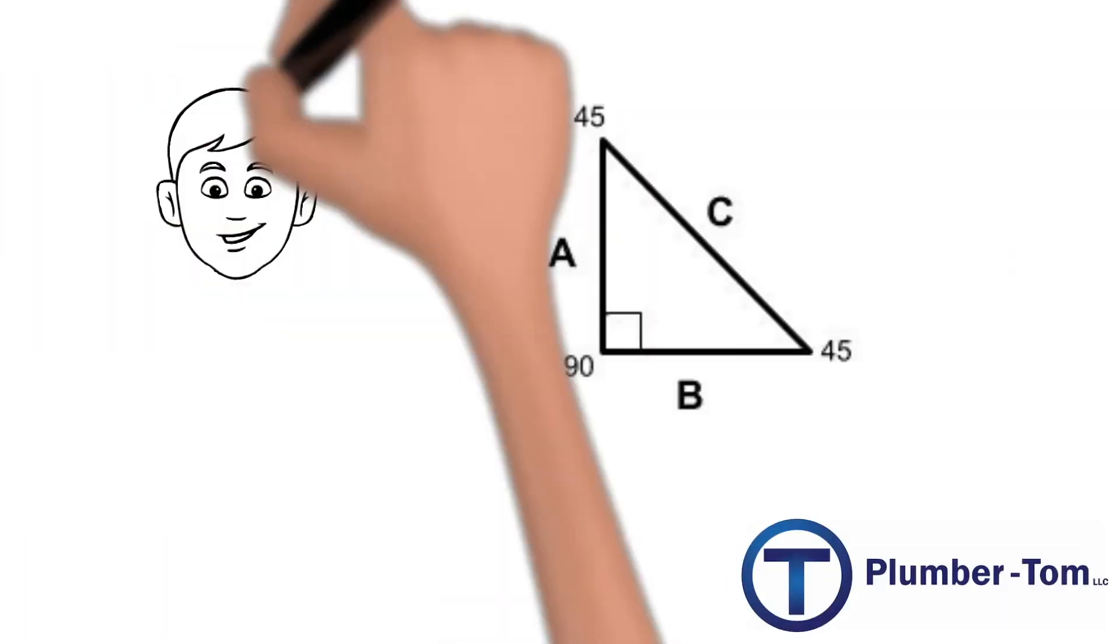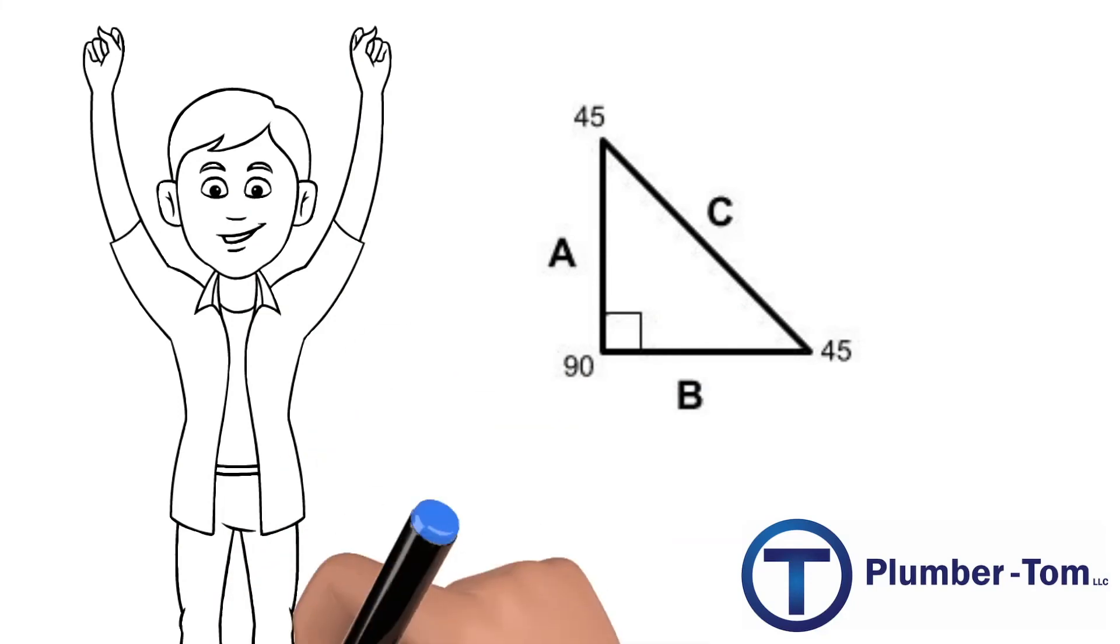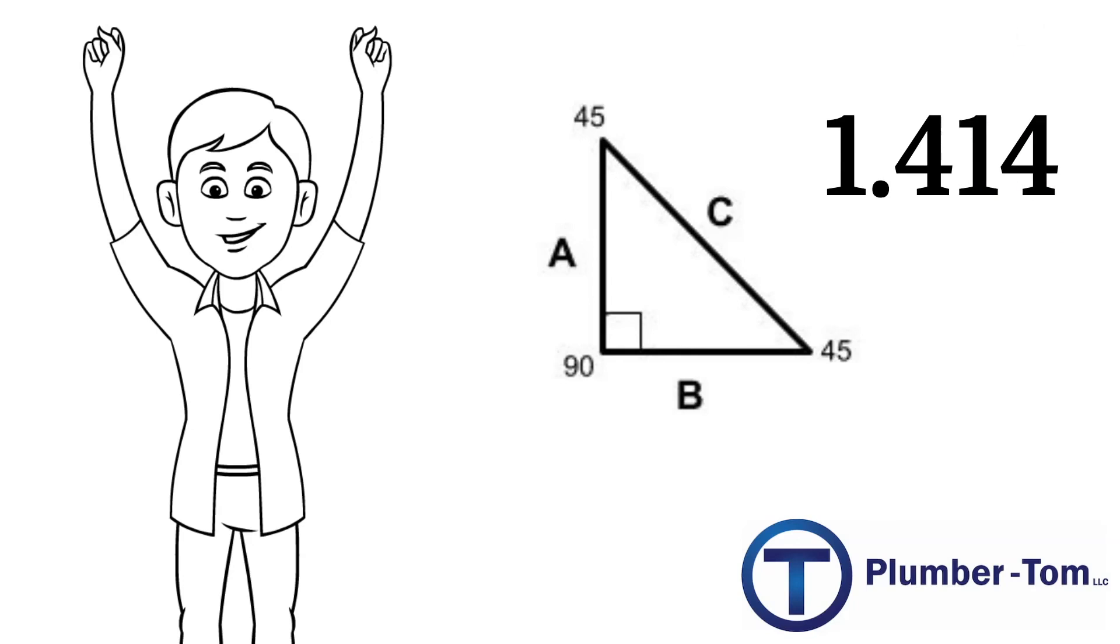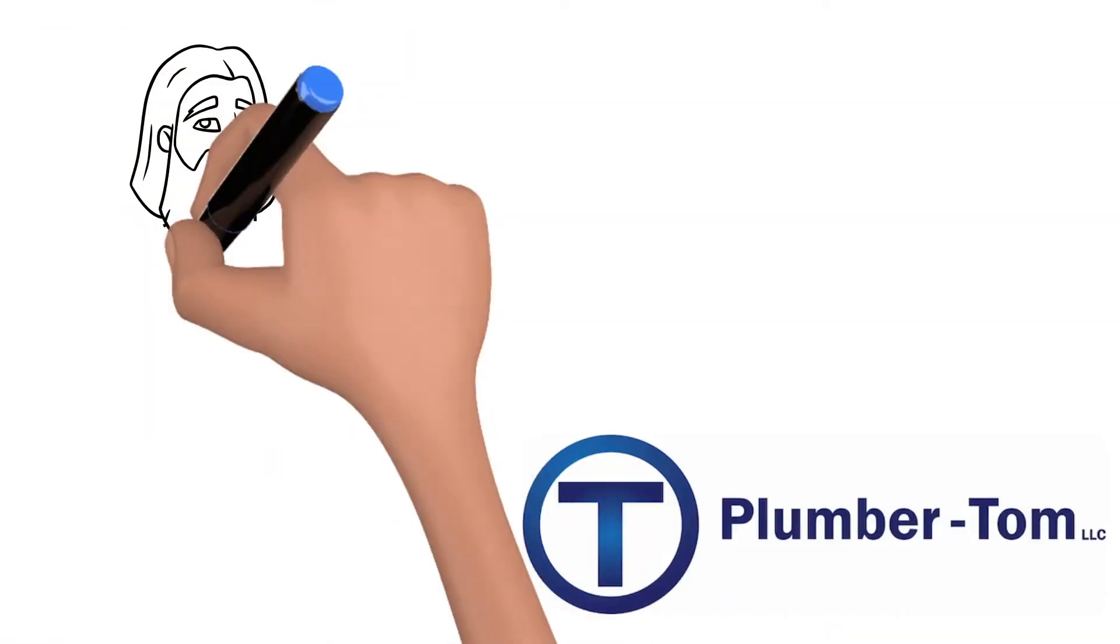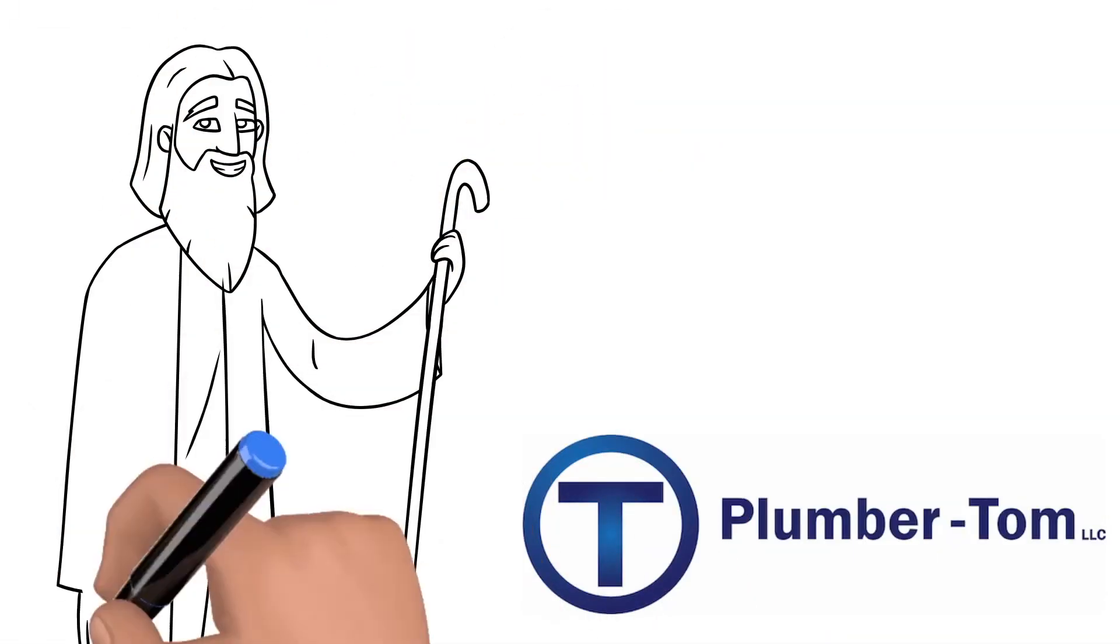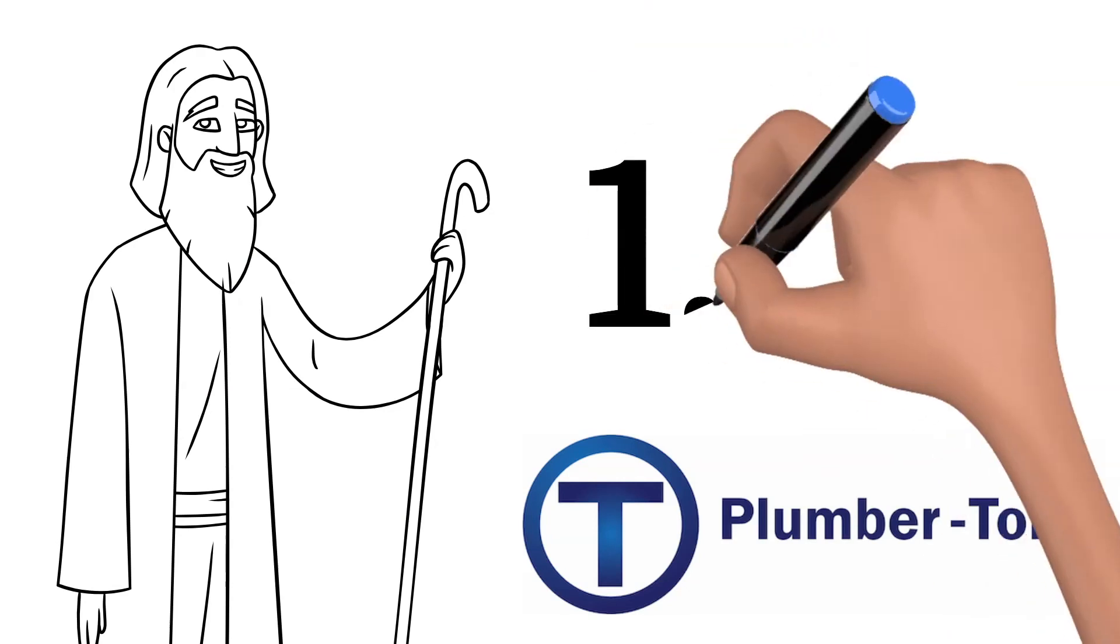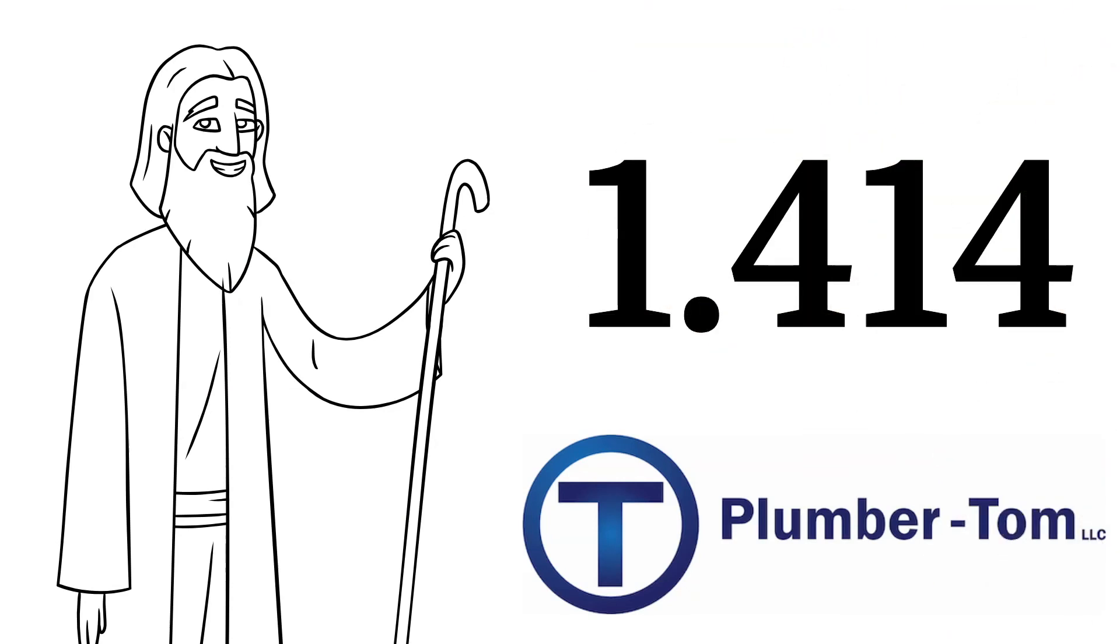This means that no matter what the size of the triangle, if it has two 45 degree angles, the diagonal will always be 1.414 times the offset. So now you know the whole story of Pythagoras, his theorem, and the origins of 1.414.